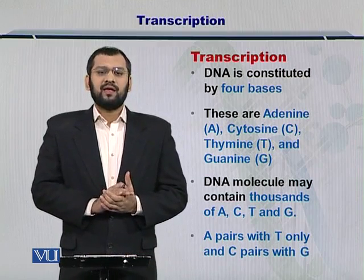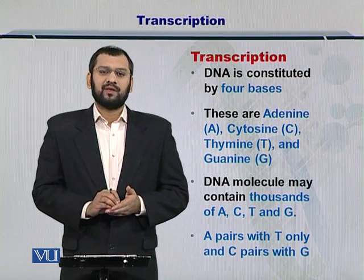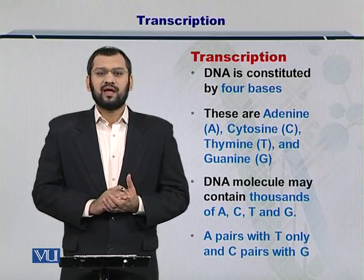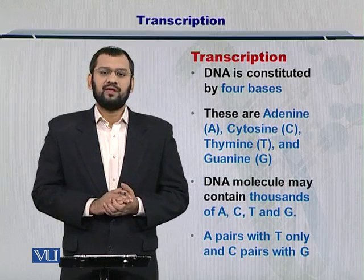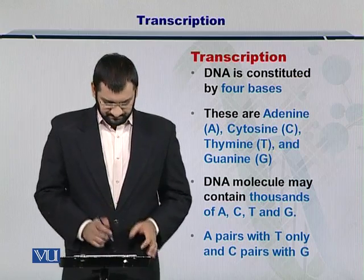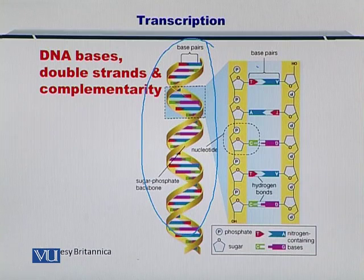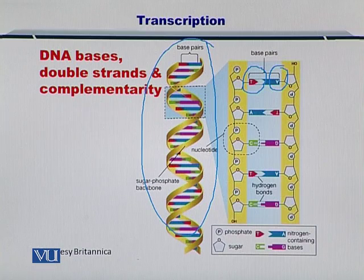In DNA, A only couples with T and G only couples with C. However, in the RNA, A gets coupled with U and C stays coupled with G. As you can see in the figure, the double stranded DNA is shown and the nucleotide bases T and A are coupled.